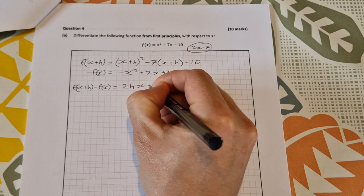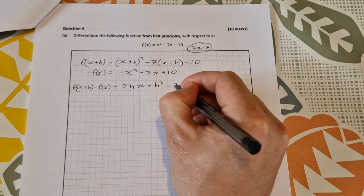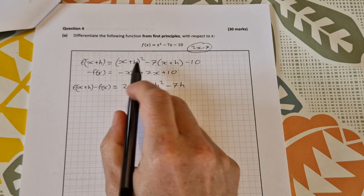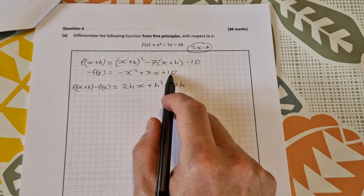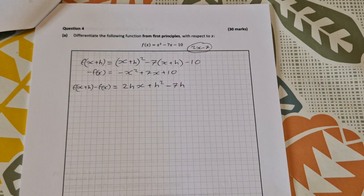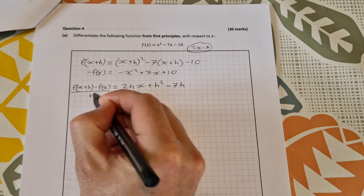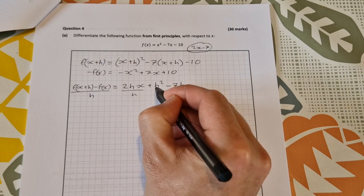Then we need to put it over h, so that's [f(x+h) - f(x)]/h. Then you'll have things simplifying out.